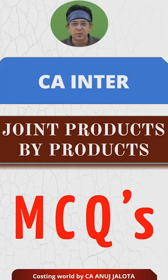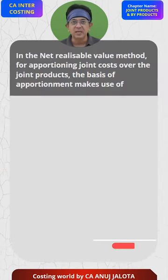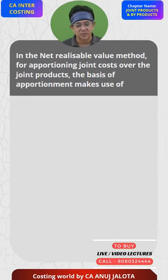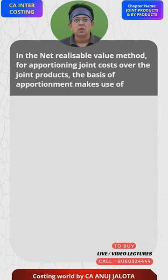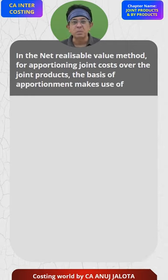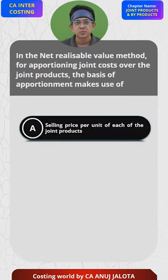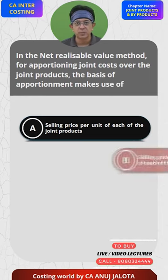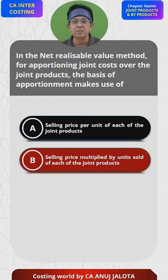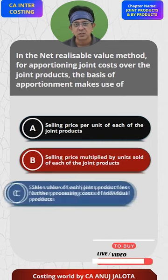Joint products and by-products MCQs: in the net realizable value method for apportionment of joint cost over the joint products, what is the basis of apportionment? Option A: selling price per unit of each joint product. Option B: selling price multiplied by units sold of each of the joint products.